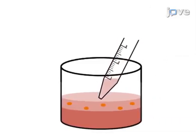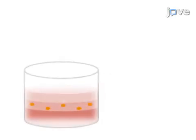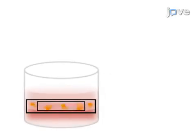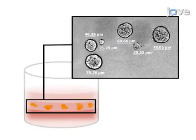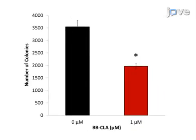Every week, an additional feeding layer is added, which is a 0.3% agarose gel with or without treatment. The final step is to count the number of colonies larger than 70 micrometers for analysis. Ultimately, inverted microscopy is used to show the difference in colony number between the control and the treatment group.